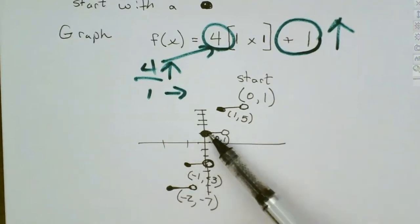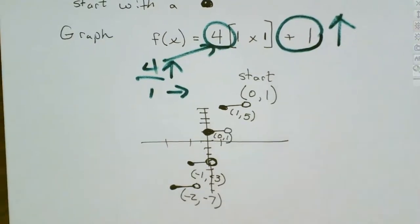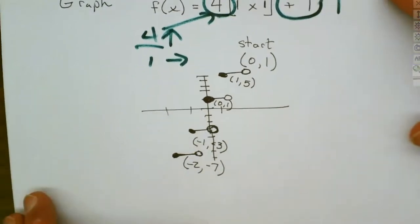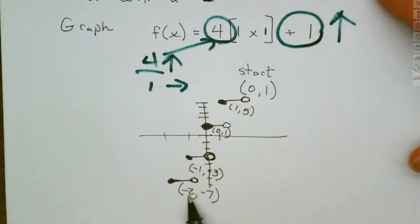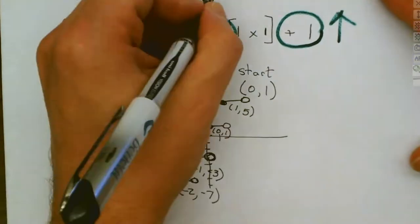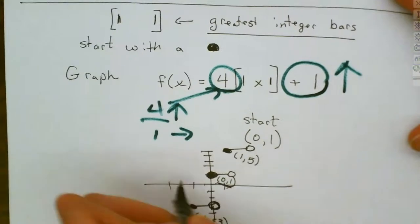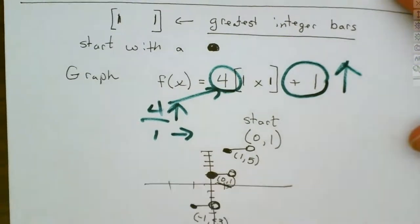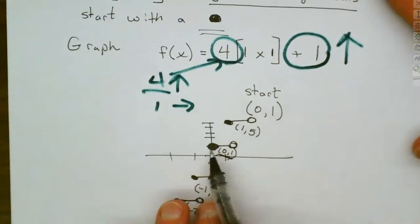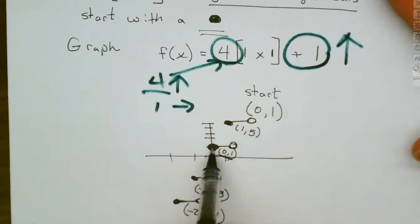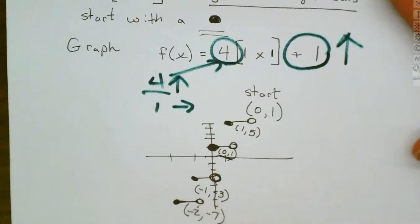For the greatest integer function, you always start with a closed circle and the end of each step gets an open circle below it — a filled-in dot on one side, open on the other. The closed circle is on top, open circle is below.